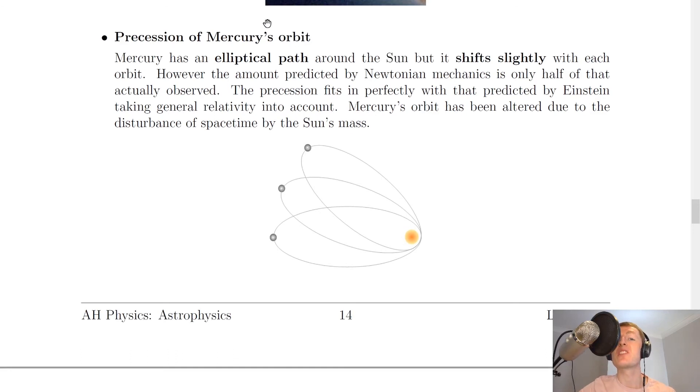The last one to mention is the precession of Mercury's orbit. So it says here that Mercury has an elliptical path around the Sun, but it shifts slightly with each orbit. However, the amount predicted by Newtonian mechanics is only half of that actually observed. The precession fits in perfectly with that predicted by Einstein taking general relativity into account. Mercury's orbit has been altered due to the disturbance of spacetime by the Sun's mass. So here you can see the shifting orbit of Mercury due to the Sun's mass.